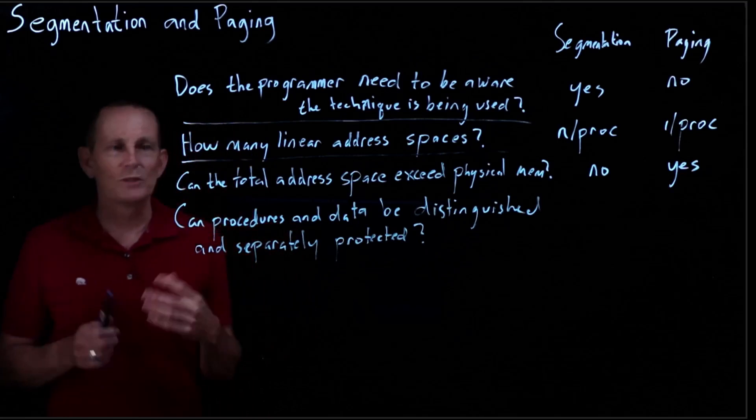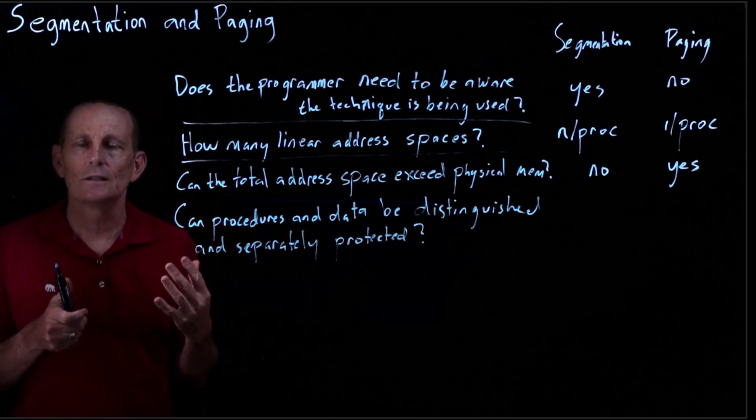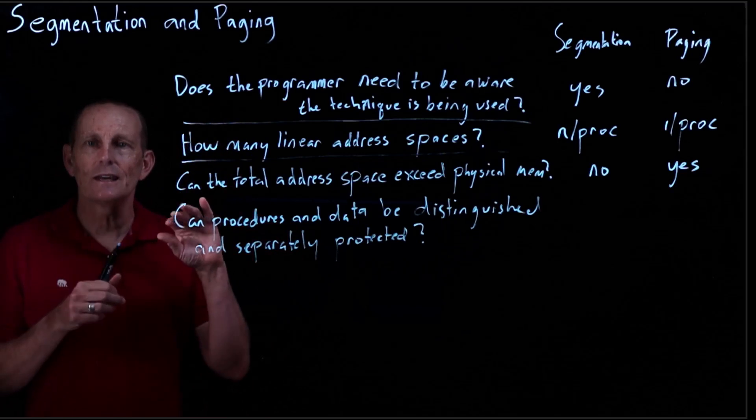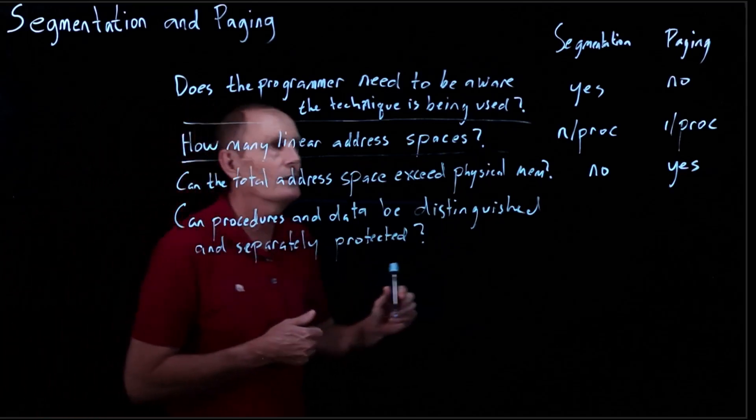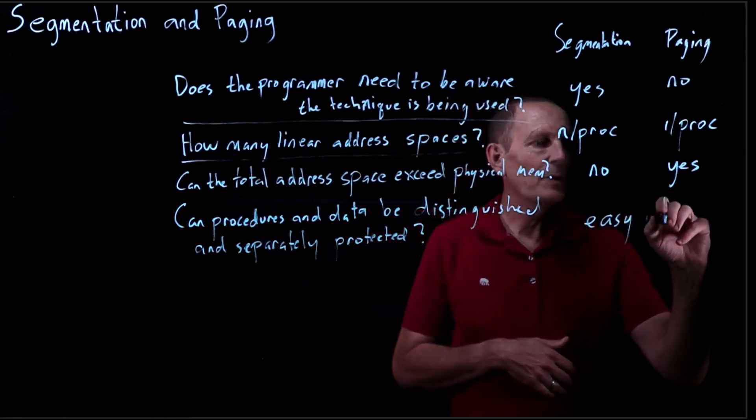So the question here, can procedures and data be distinguished and separately protected? So can you easily say, I want to have these permissions for procedures and these permissions for data? And for segmentation, this is easy. For paging, it's harder.